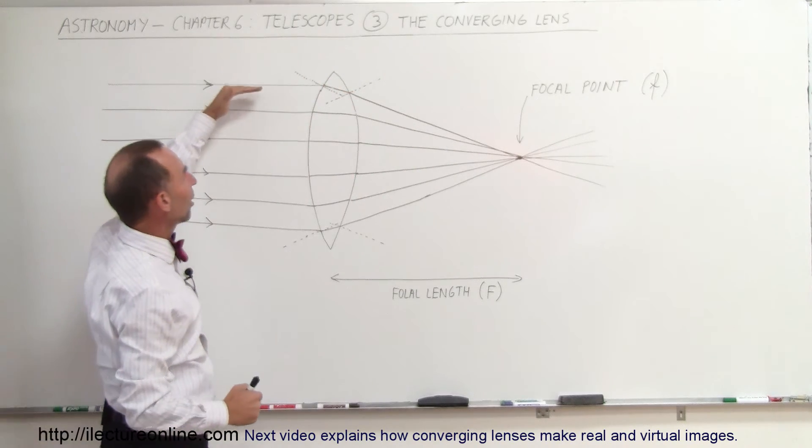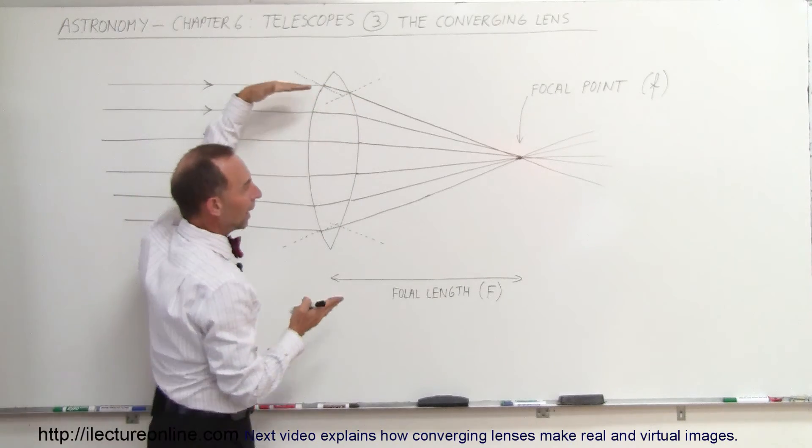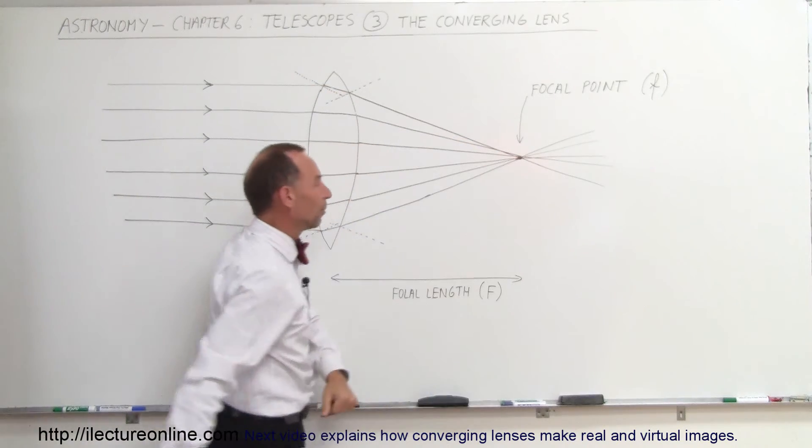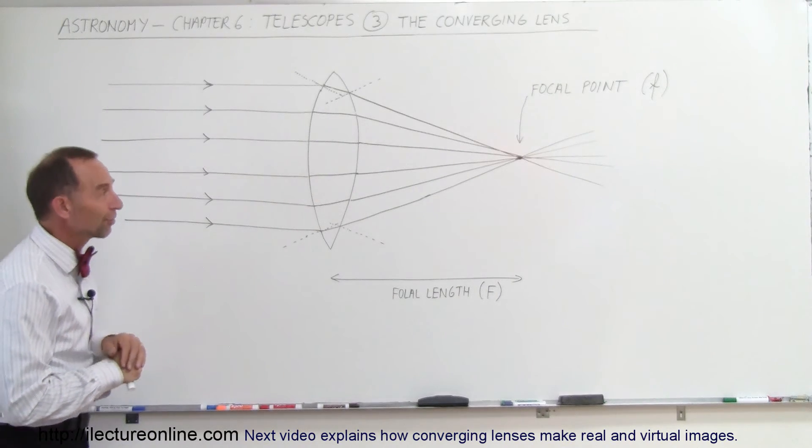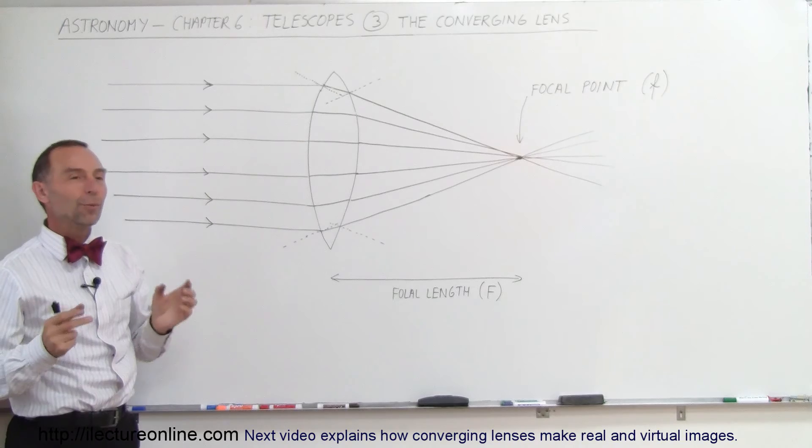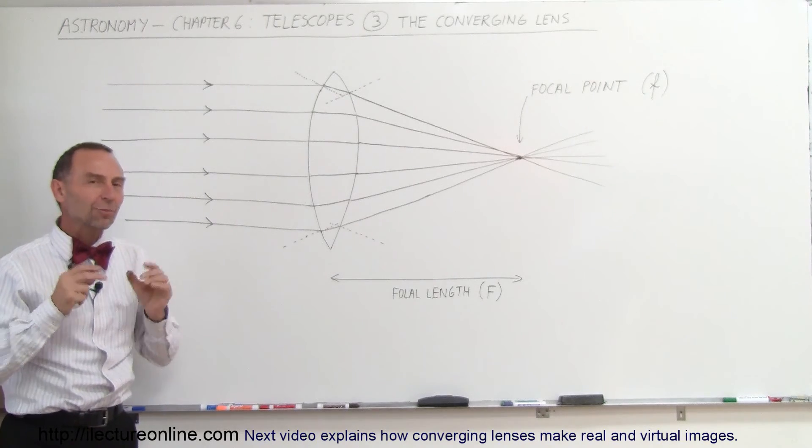But because of the shape of the glass, it causes the light to bend more and more, and then comes together into the focal point. That's the key to lens making, and that's the key to, for example, Galileo's telescope.